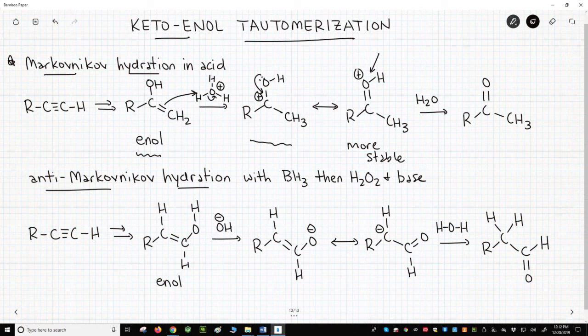We're now almost finished. We can get the keto tautomer just by deprotonating the oxygen. That's it. The mechanism for converting an enol tautomer to a keto tautomer in acid.